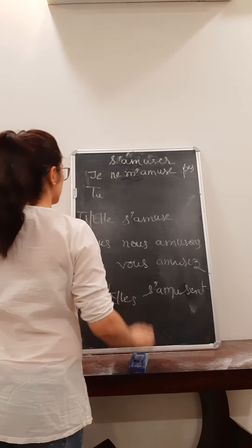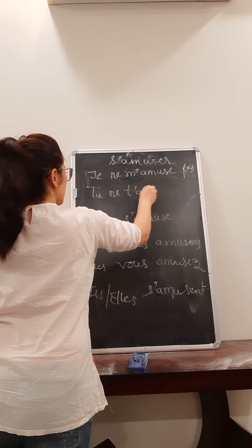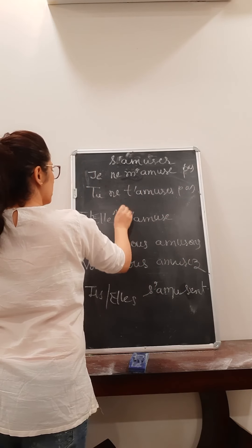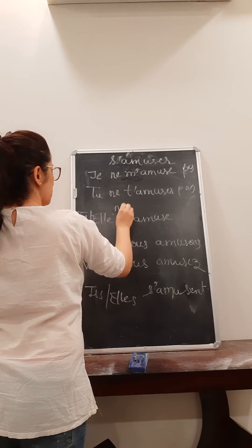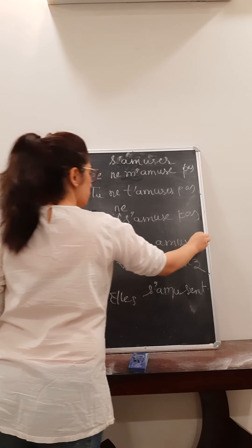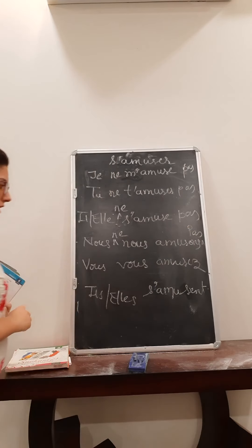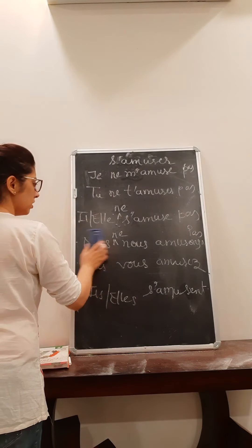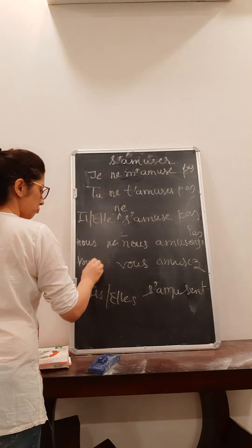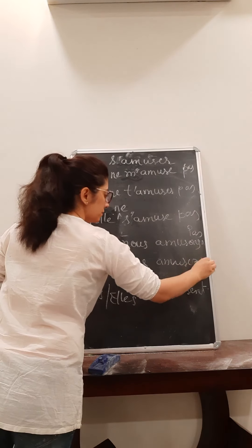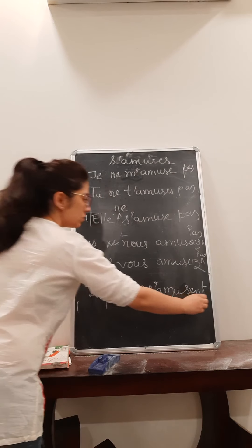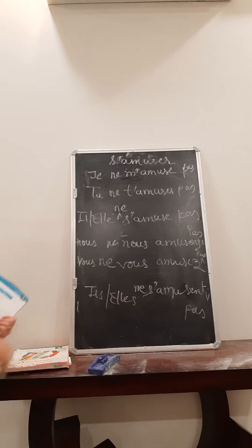So with 'tu': 'tu ne t'amuses pas'. Then 'il/elle ne s'amuse pas'. Likewise 'nous ne nous amusons pas'. 'Vous ne vous amusez pas'. And 'ils/elles ne s'amusent pas'. That's it.